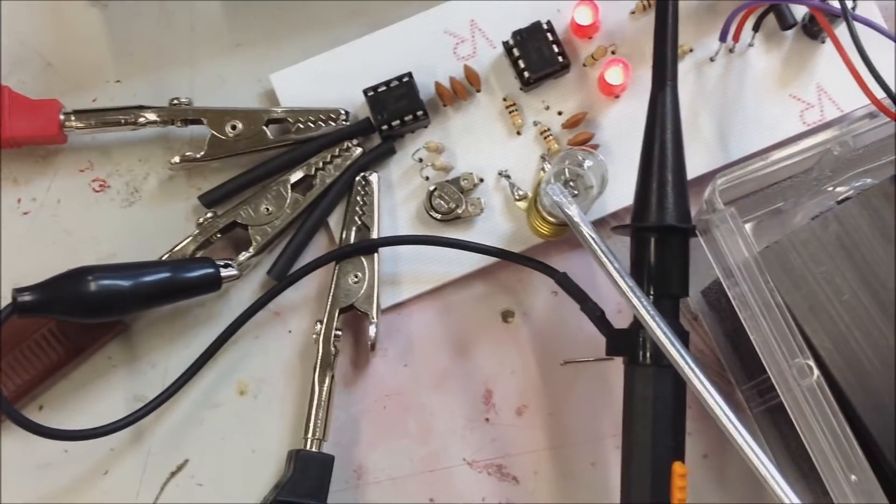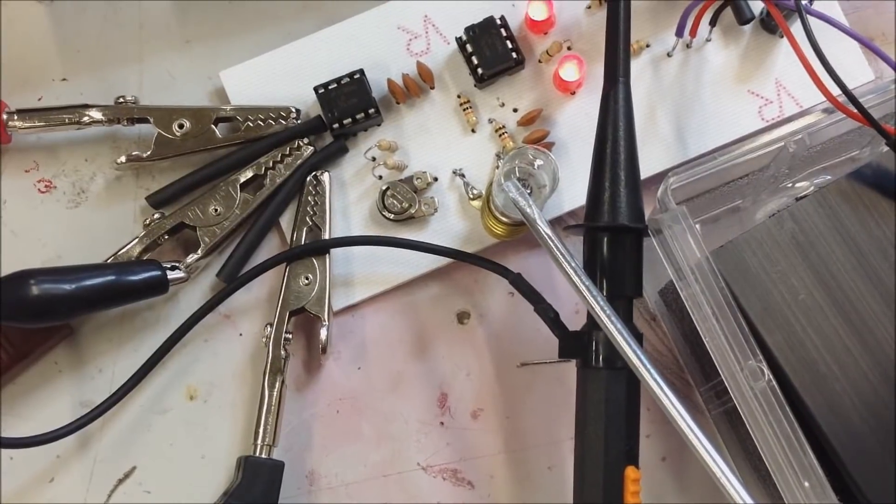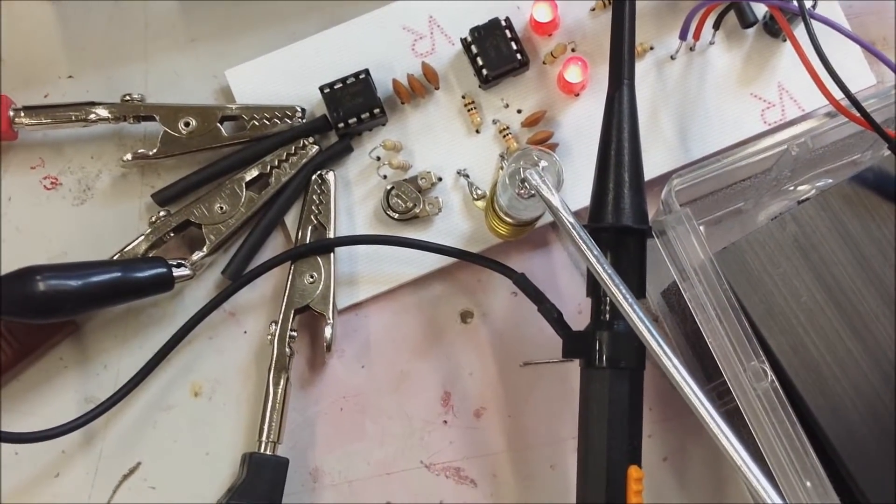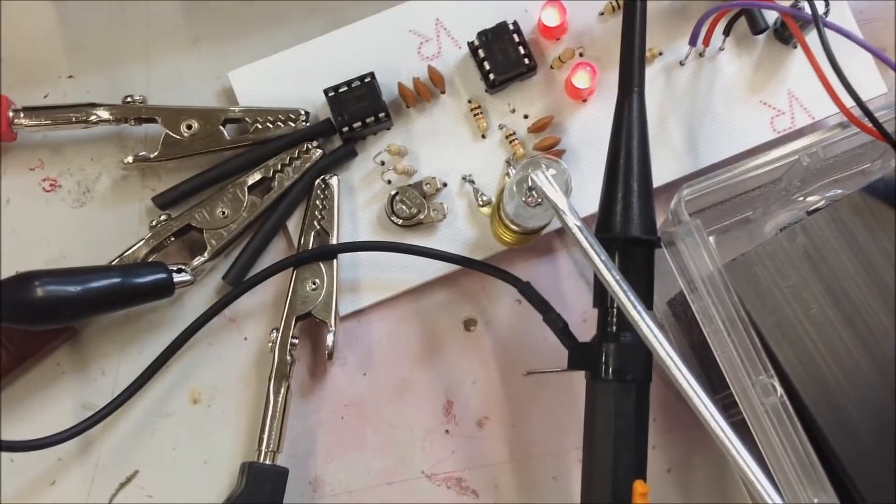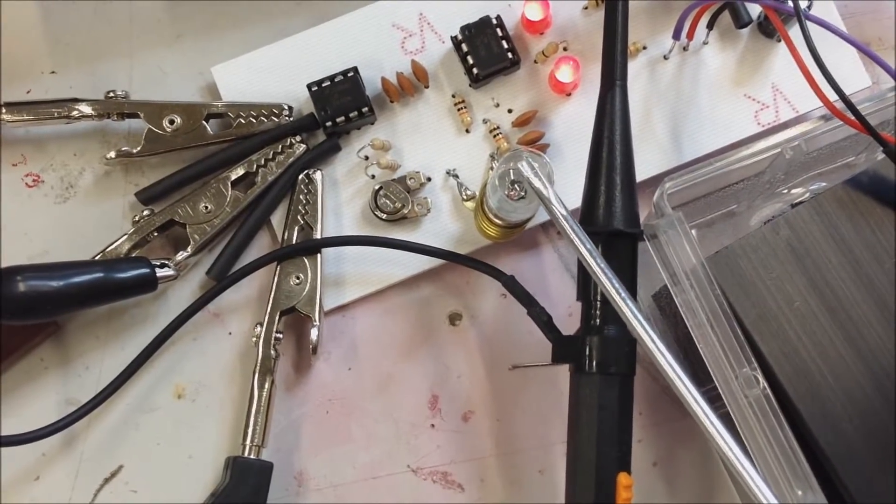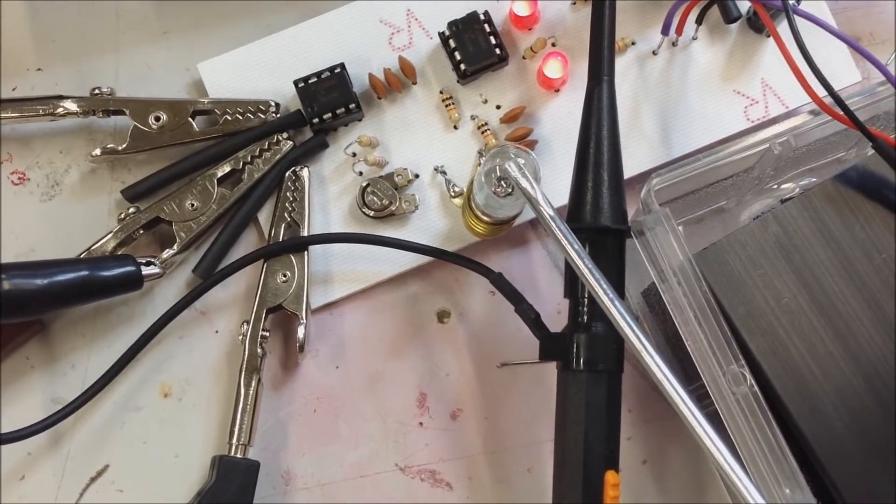This lamp here is very important to the Wien bridge oscillator because it plays part in the feedback of the oscillator. And I'll explain a little bit more about that when we do the simulation of the circuit.